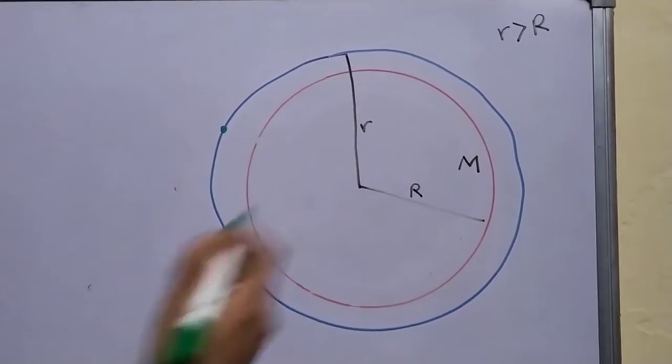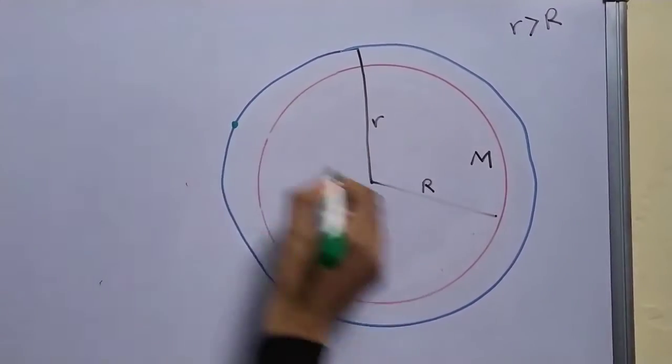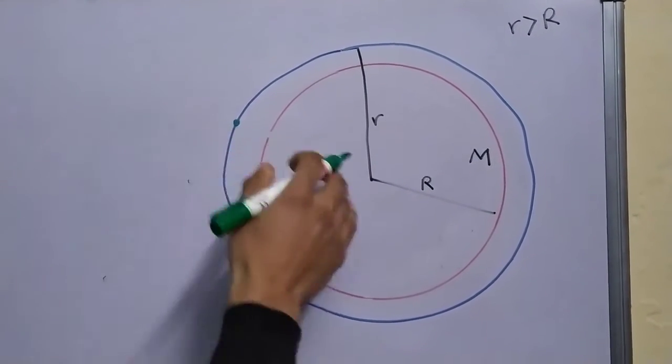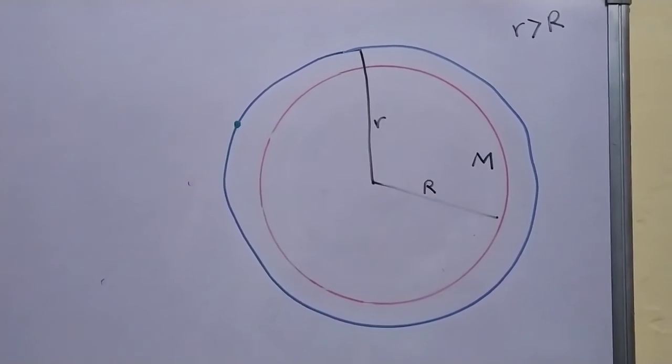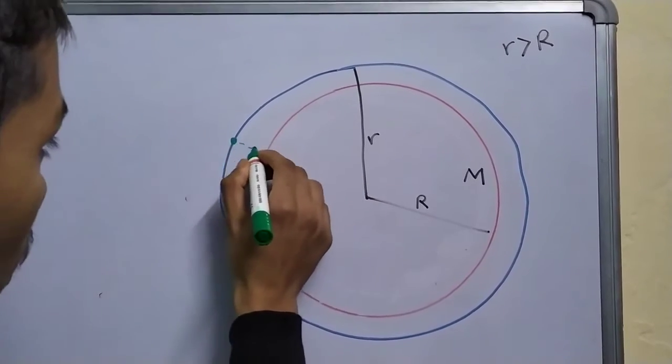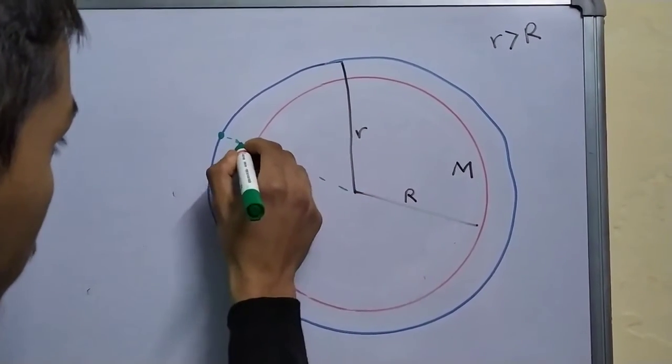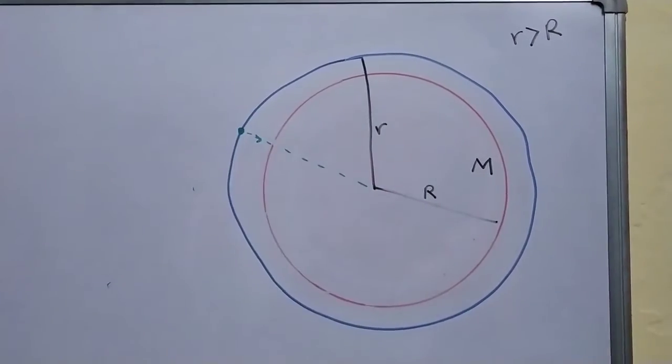The field, first point is that it has to be along the radial direction. We're not commenting on whether it's inward or outward, we'll find that out, but it has to be along this direction. Why? Let's see.